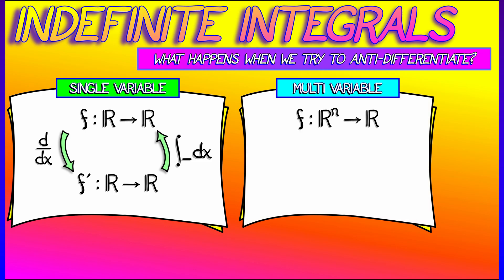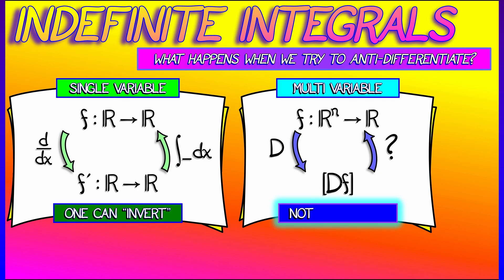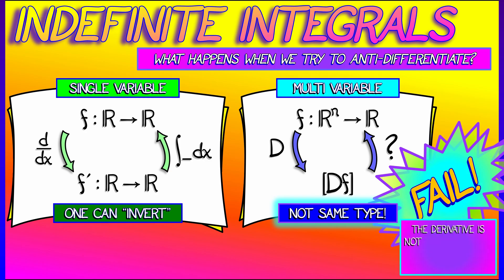But when we have a multivariate function, if f has n inputs in one output, what happens when we take the derivative? Well, the derivative is now a linear transformation at every single point. It's not exactly the same type of function that we started with. If I evaluate the derivative at a particular location, I'm not getting a scalar value. Rather, I'm getting a linear transformation. That means that trying to anti-differentiate sort of fails.